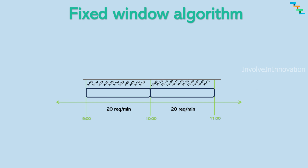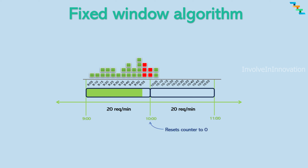Let's see this with an example. We define a fixed limit of 20 requests per minute. Initially the counter is set to zero. Whenever a new request comes in during that period, the counter is incremented and verified. If the counter value is less than the requests per minute value, the request is processed and the response is returned to the client. If the counter value exceeds the requests per minute value, the request is not processed and a 429 response is sent. The counter resets at the start of every new period — for example, at the start of every minute.